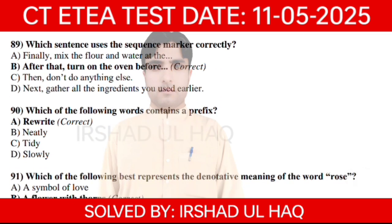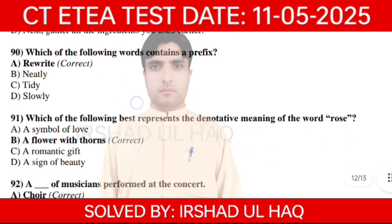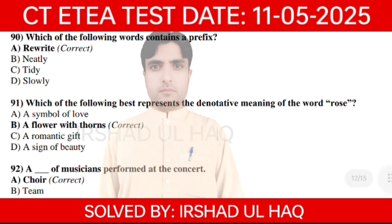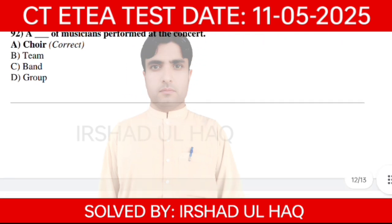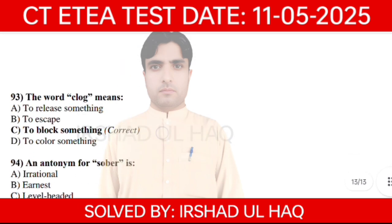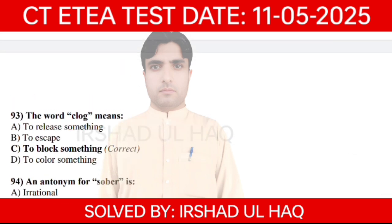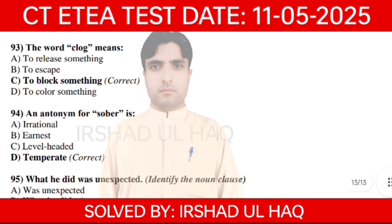Which of the following words contains a prefix? Which of the following best represents the denotative meaning of the word 'rose'? A flower with thorns. A group of musicians performed at the concert.